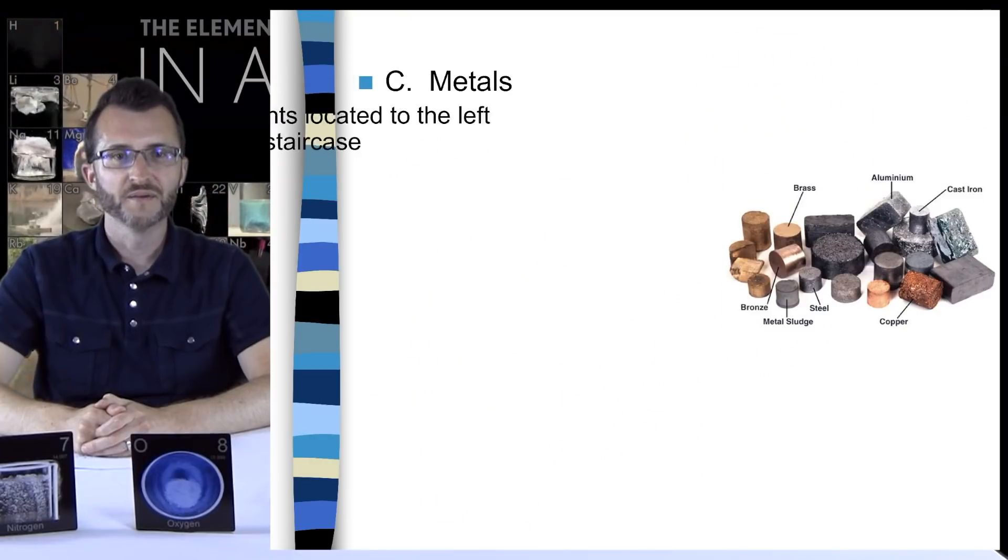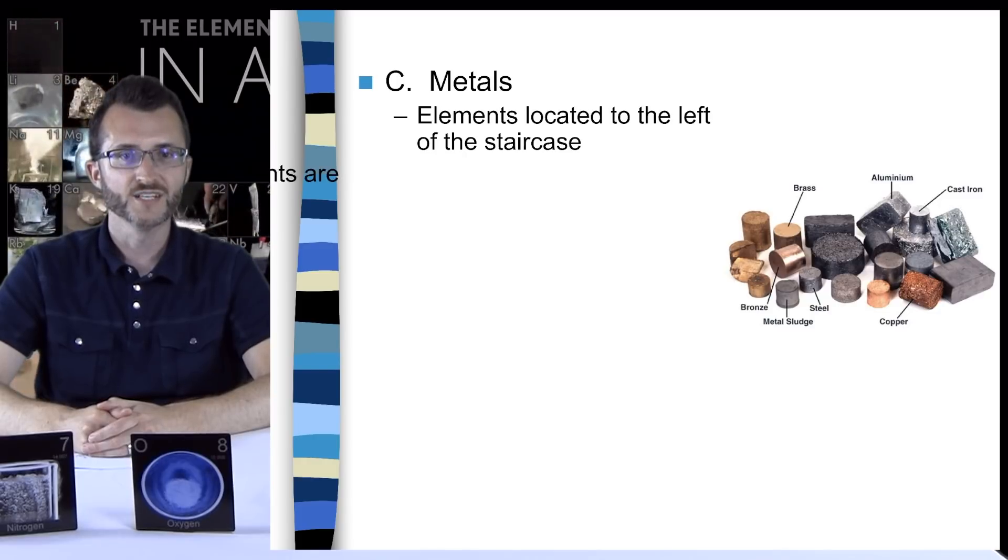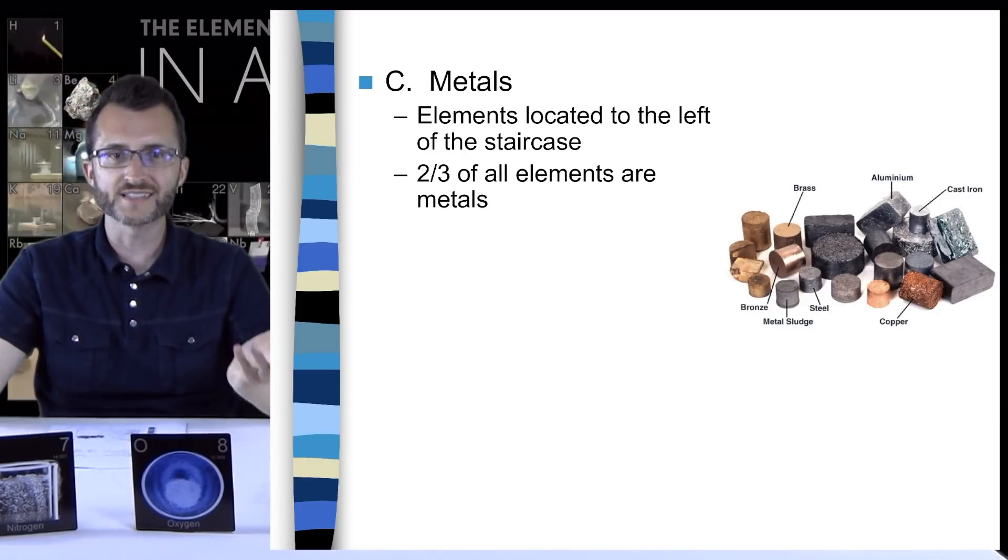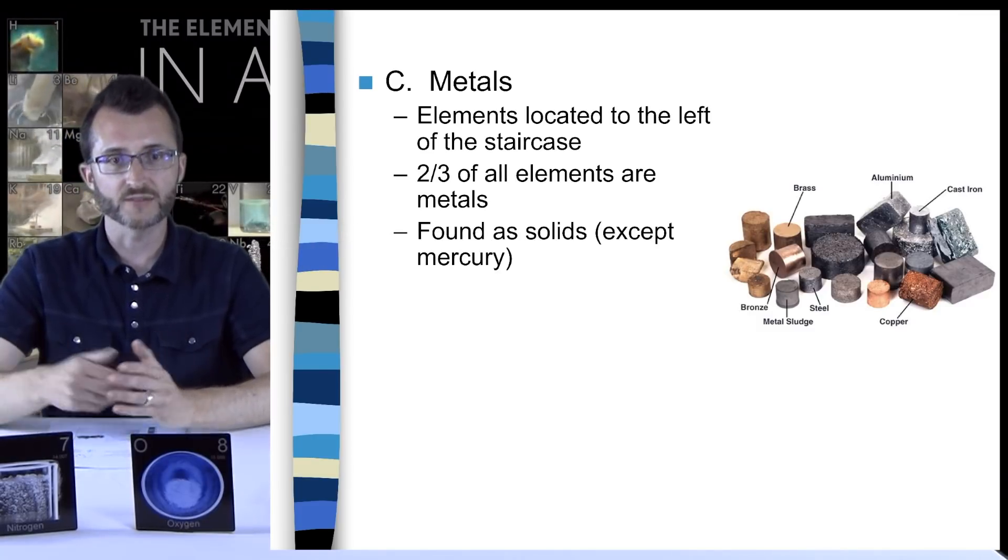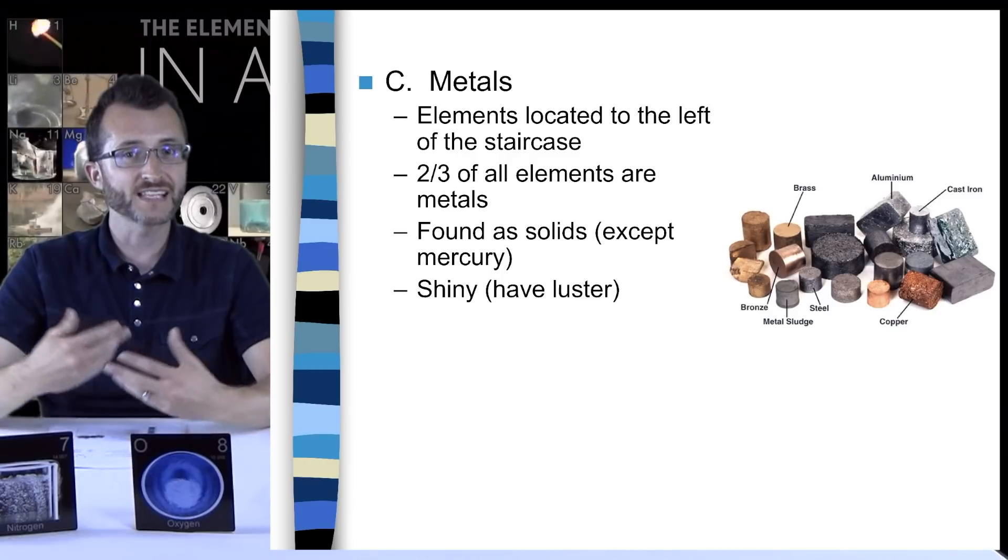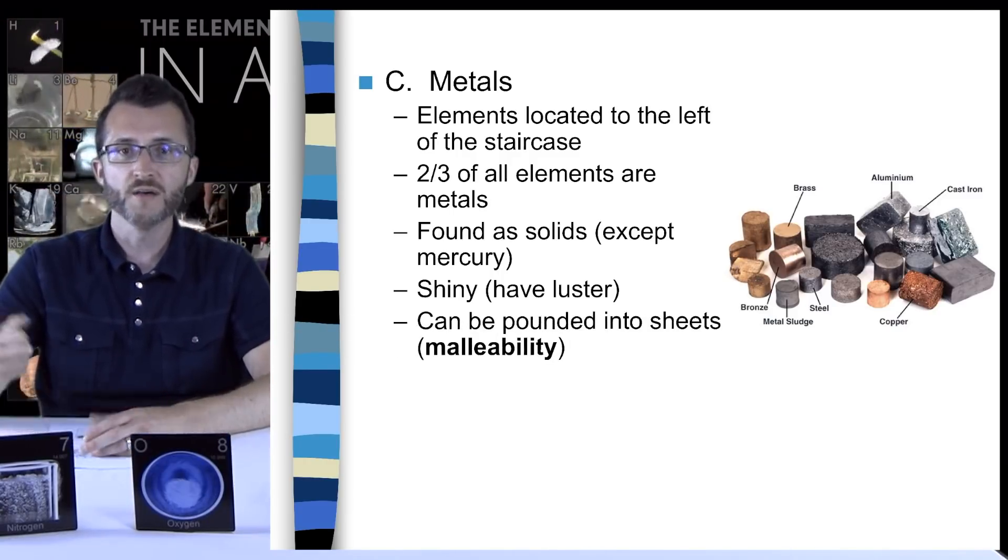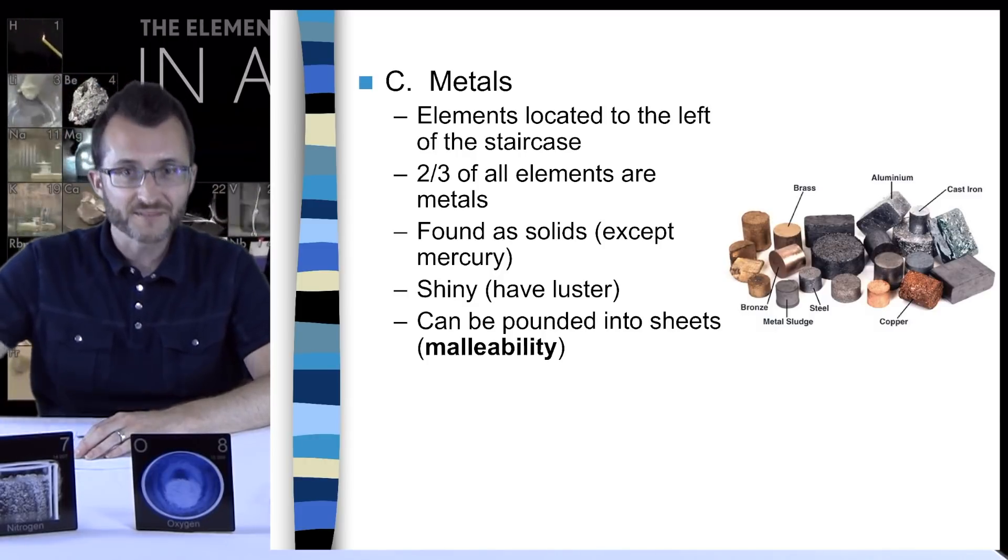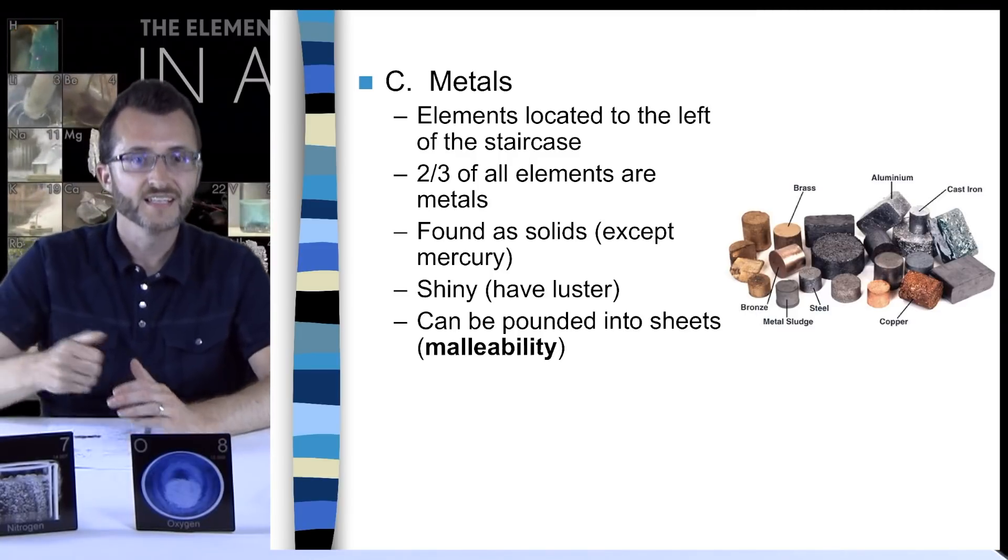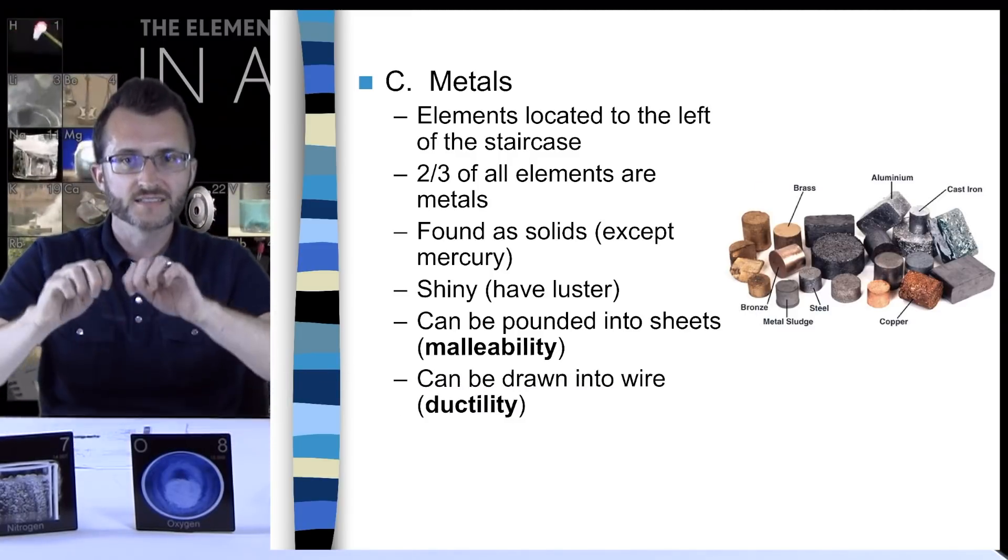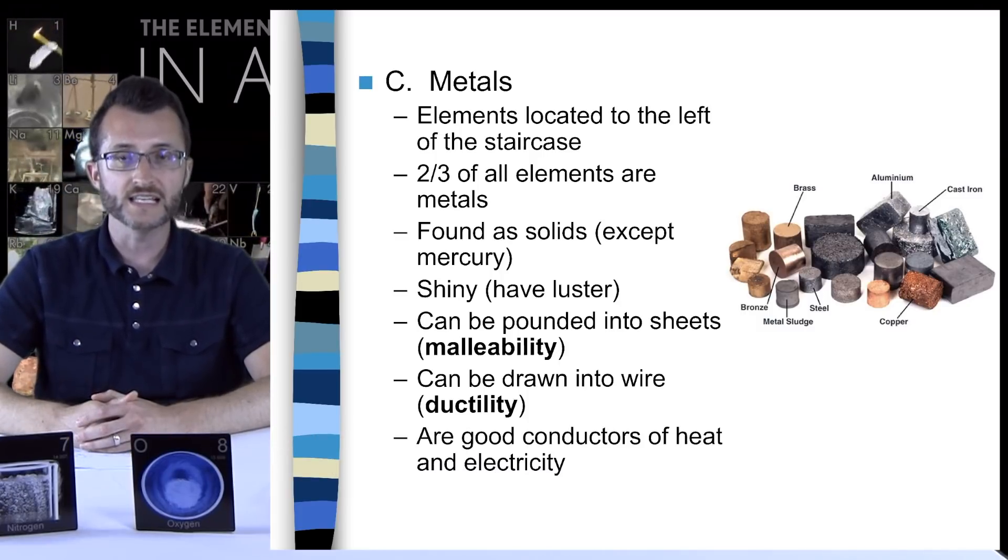Let's talk about metals. Metals are the elements located to the left of the staircase in bold on your periodic table. Two thirds of all elements are metals. They're found as solids, except for mercury, which is a liquid. They're shiny, or we say they have luster or are lustrous. They can be pounded into sheets, which we call malleability. Like the word mallet, pound into sheets. We say the metal is malleable. They can also be drawn into wire, ductility. We say the metal is ductile. They're also good conductors of heat and electricity.